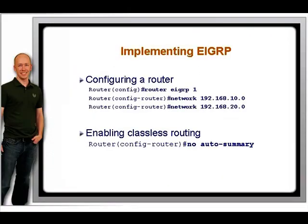Basic EIGRP configuration is not that different from configuring RIP. The primary difference for basic configuration is that you must specify an autonomous system number that defines your routing domain. The autonomous system number is assigned globally for the routing process and can be any number you want, but that same number must be used on all routers. Routing updates will not be exchanged between routers with different autonomous numbers.